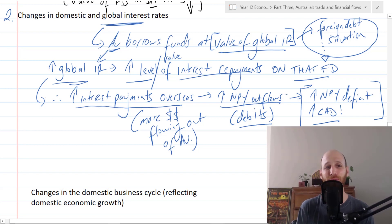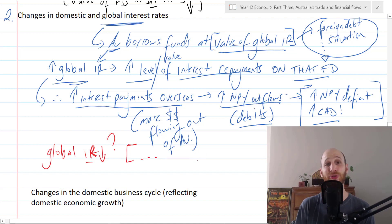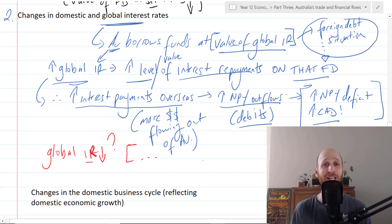You could think about the flip side — what would happen if global interest rates fell? You can follow that same process to see what would then happen for the NPY deficit and the current account deficit. That's how changes in global interest rates affect the NPY account and the balance on the current account.